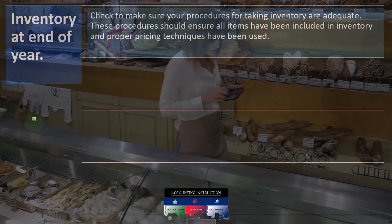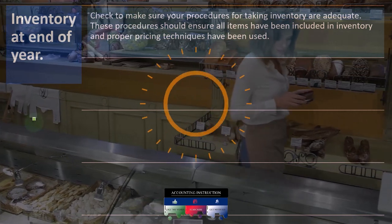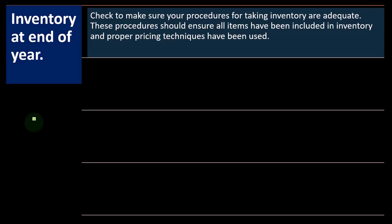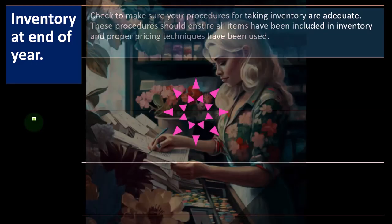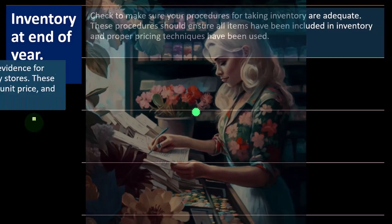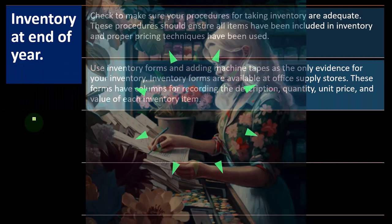But you still need to do a physical count to make sure the system is working properly and to make sure your ending inventory is accurate and ties out to reality — accounting for shrinkage and spoilage and that kind of thing.